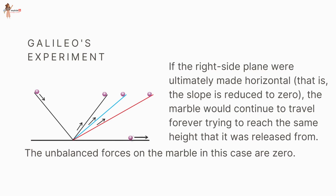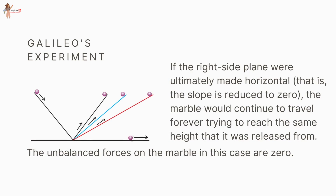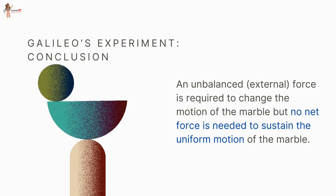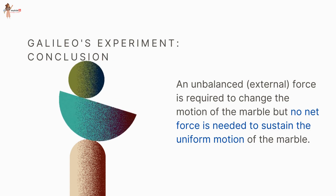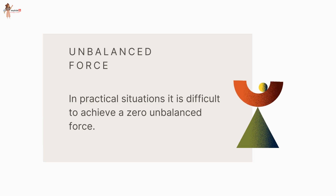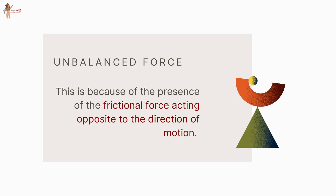If the right-side plane were ultimately made horizontal — that is, the slope is reduced to zero — the marble would continue to travel forever, trying to reach the same height from which it was released. The unbalanced forces on the marble in this case are zero. This suggests that an unbalanced or external force is required to change the motion of the marble, but no net force is needed to sustain uniform motion. In practice, it is difficult to achieve zero unbalanced force because of frictional force acting opposite to the direction of motion.